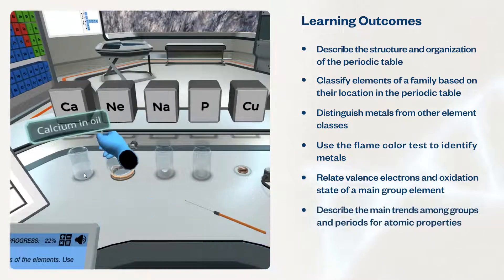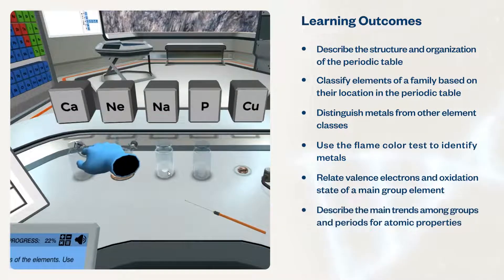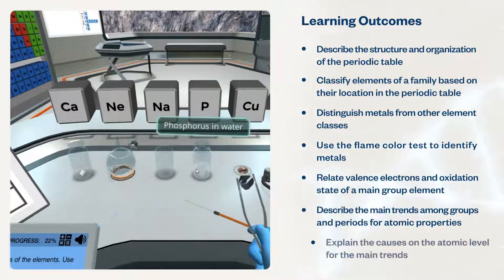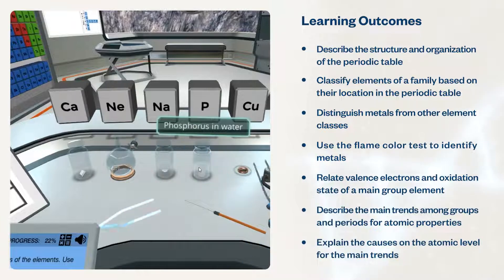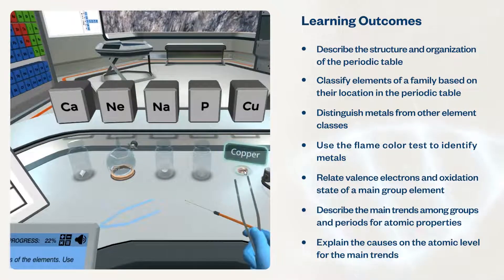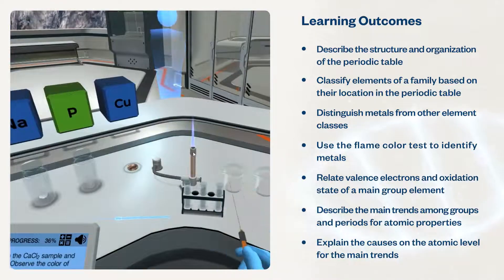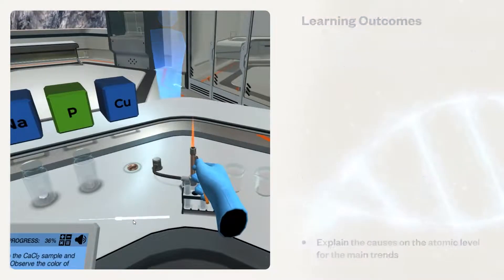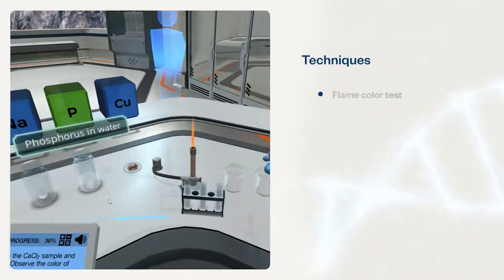They will describe the main trends among groups and periods for atomic properties, explain the causes on the atomic level for the main trends among groups and periods concerning atomic radii, ionization energy, and electronegativity. Students will use techniques such as the flame color test.